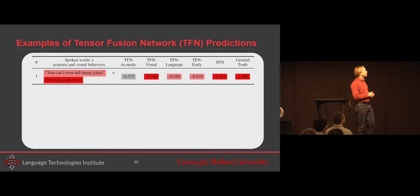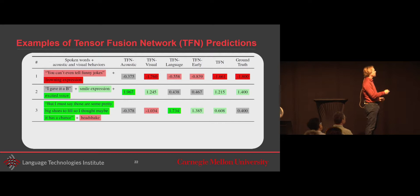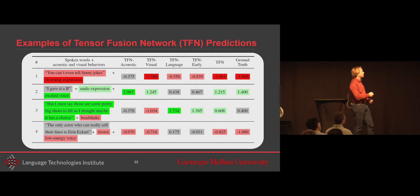So here is an example. You can't even tell funny jokes. And then you have a frowning. You can't tell even funny jokes. You can't tell you something negative, but may get a little bit confused with funny jokes. So the language gets... So this is just acoustic, just visual, just language, or fusion, and this is the ground truth. Sorry if you can't see. But the frowning clearly comes as a negative and makes the fusion together. I gave it a B. This is language only, but because of the smile and excited, it increases. But I must say those are some pretty big shoes to fill, so I thought maybe it has a chance. But then you have a strong head shake, which brings it as very negative, so at the end it's not as positive as it could have been. And this is another example where the low energy in the frown makes it much lower.